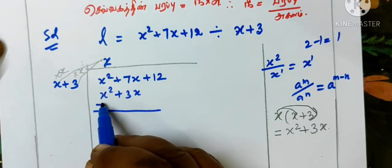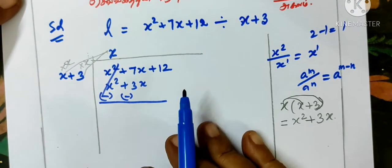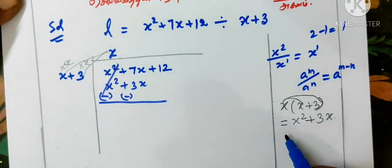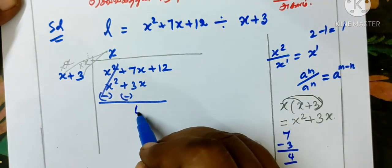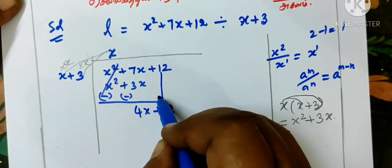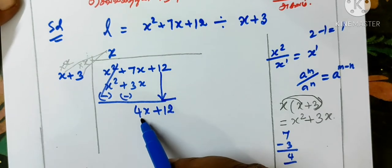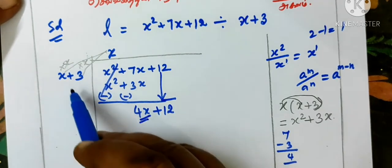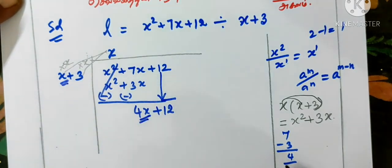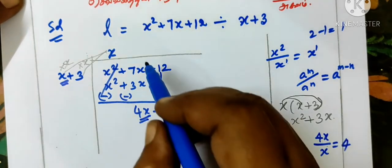Now sign change at this step. Cancel. So 7 minus 3 equals 4 — write 4x here. Then bring down 12, giving 4x plus 12. In the next step, divide the first term: 4x by x — x cancels — so it is 4.